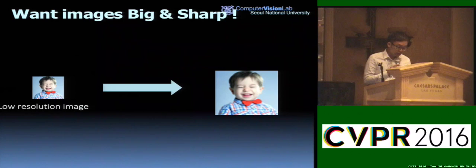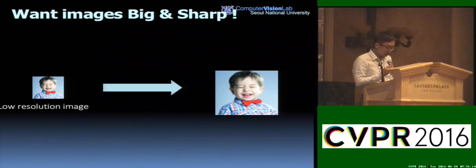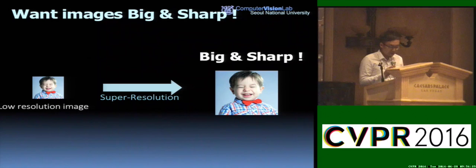The super-resolution problem, abbreviated as SR, is the problem of reconstructing sharp, high-resolution images from given spatially low-resolution images. In normal situations, we can usually get large but blurry or unclear images from most image viewers. But with some super-resolution techniques, we can get big and also sharp images from low-resolution images.